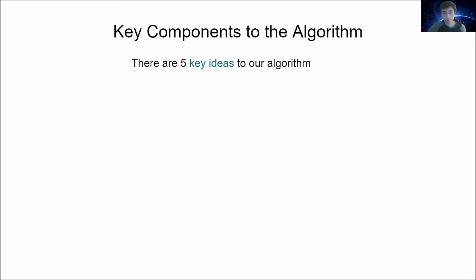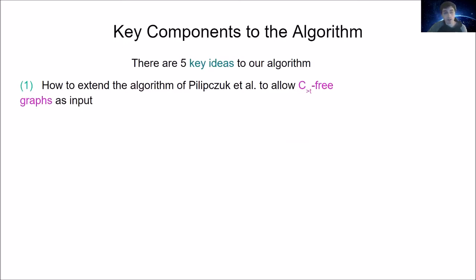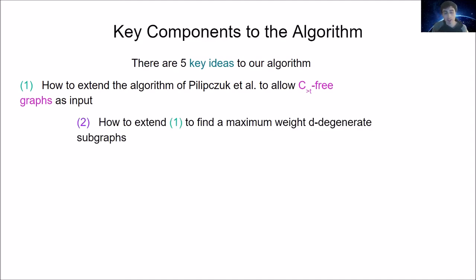What are the key components of our algorithm? There are five key ideas. The first is how to extend the Pilipczuk et al. algorithm — the quasi-polynomial time algorithm for independent set on P_t-free graphs — to work on C_{>t}-free graphs as input, which is a strictly more general class of graphs.